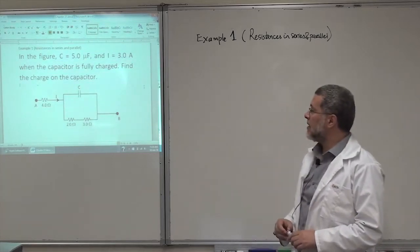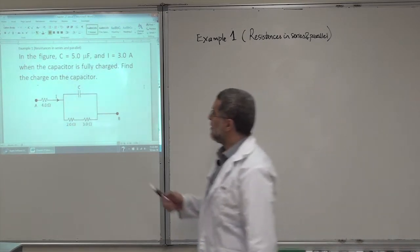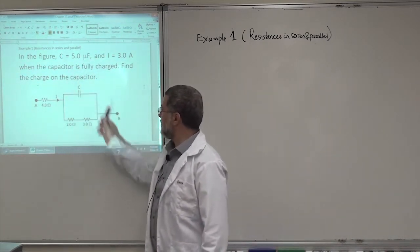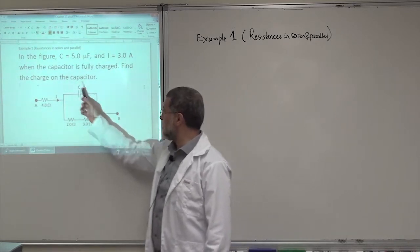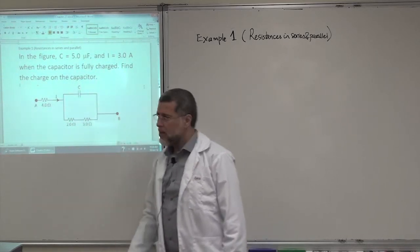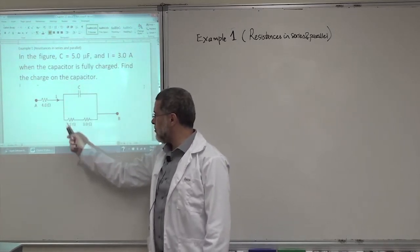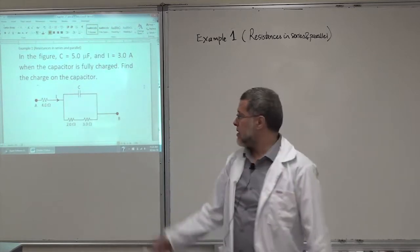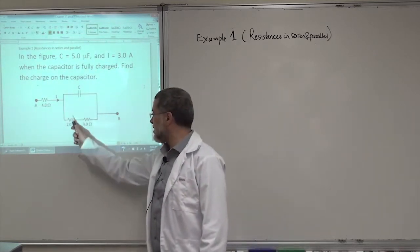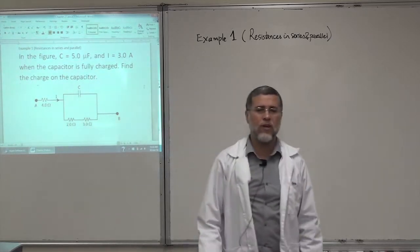Let's look at this example about resistance in series and parallel. You can see in the figure there's a capacitor in this circuit. We have one resistor of four ohms and two resistors here. Since the same current is passing through those two, they are in series, so I can replace them with one resistance equal to five ohms.